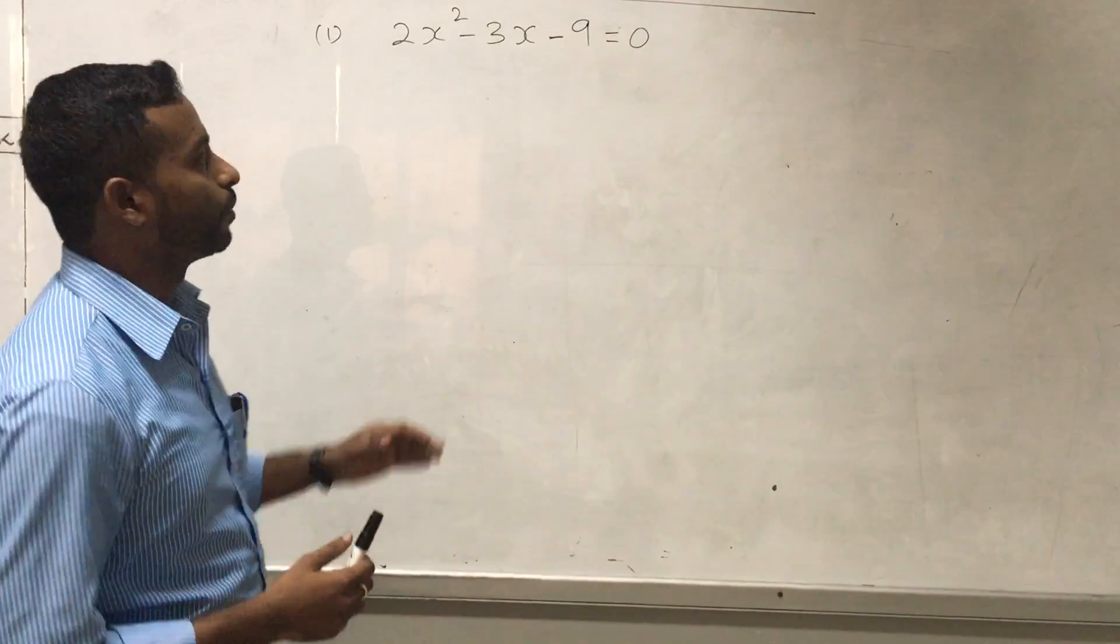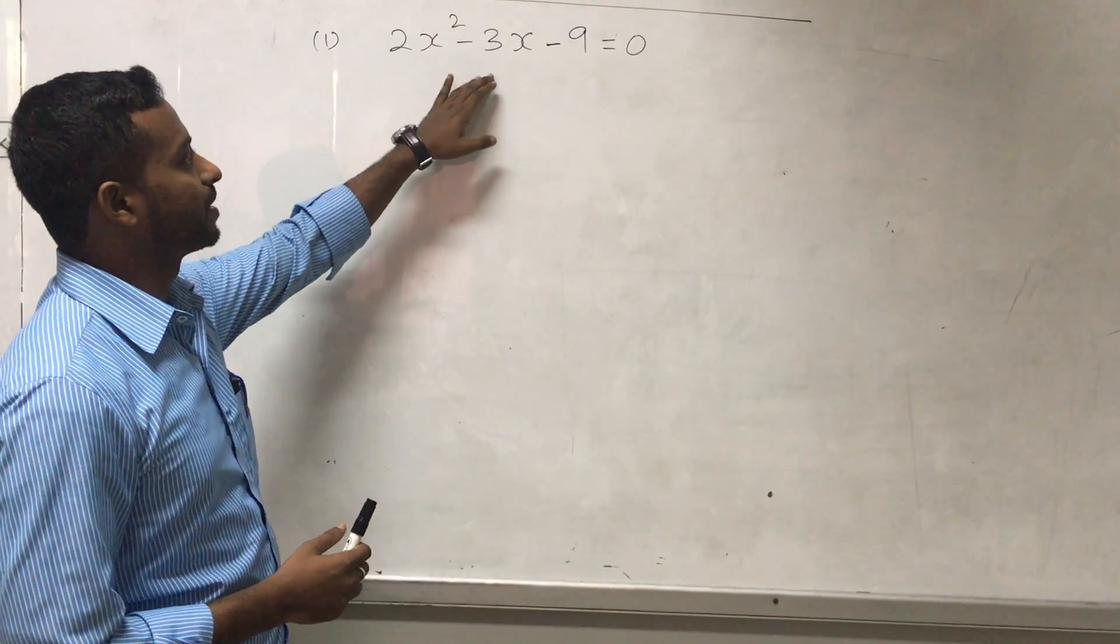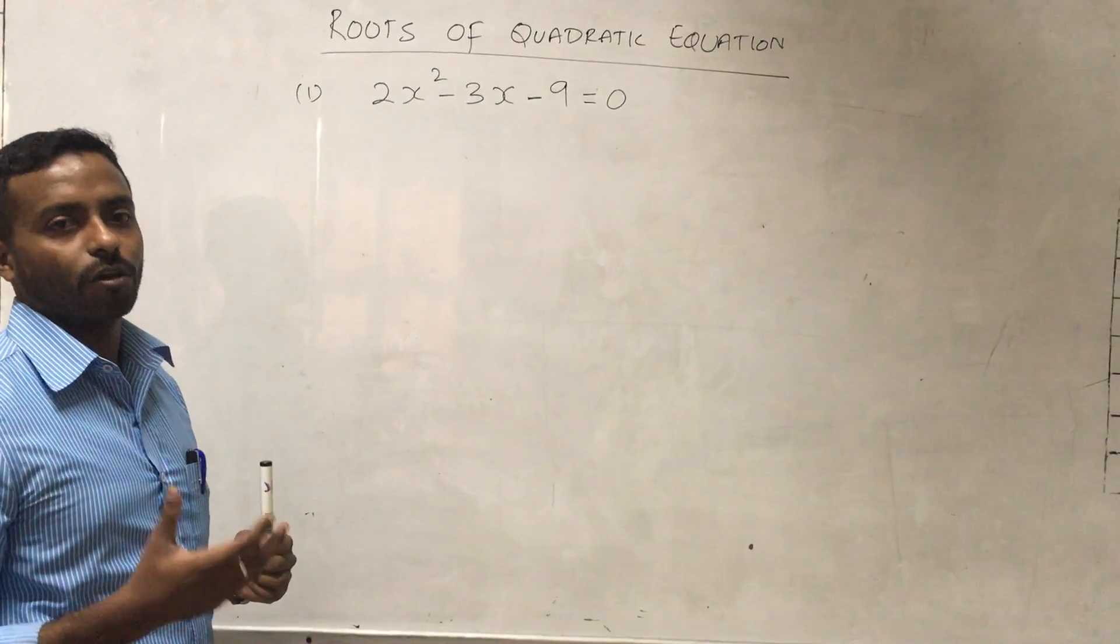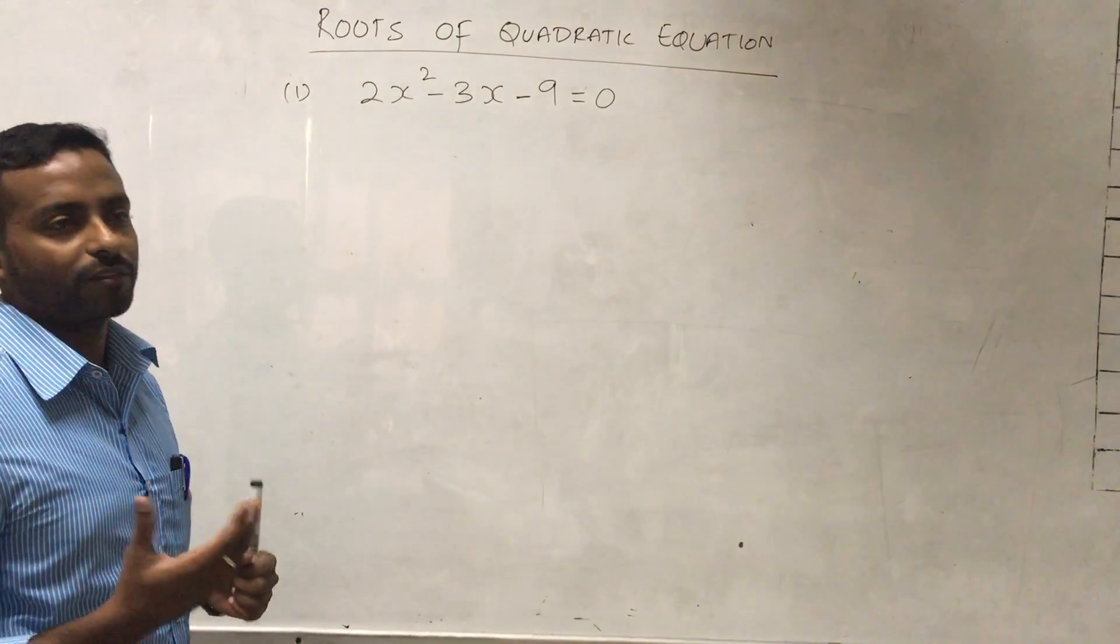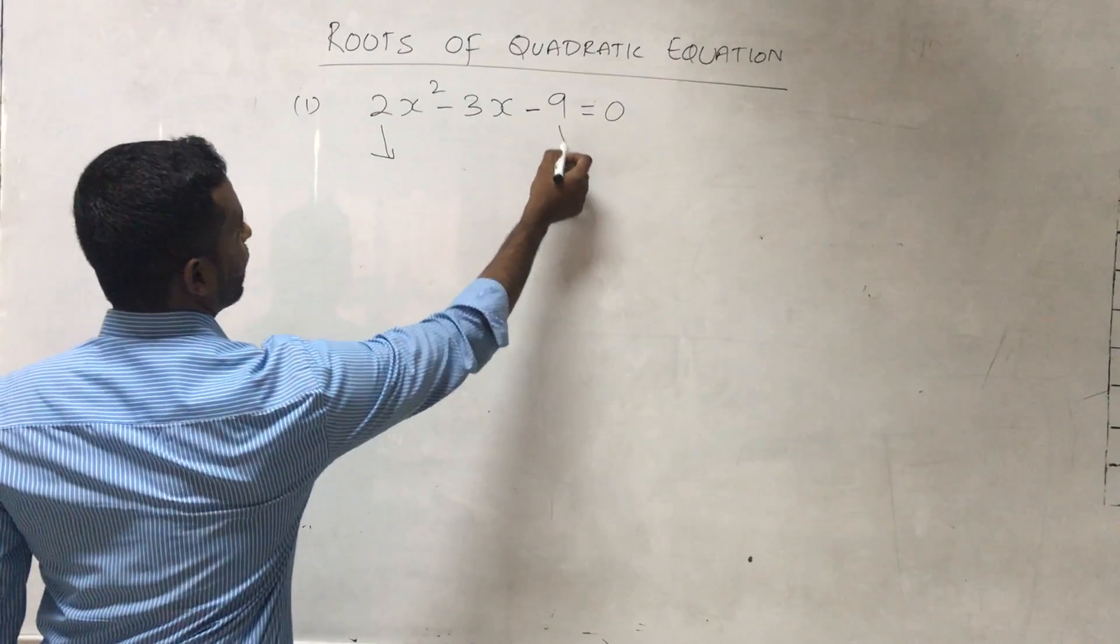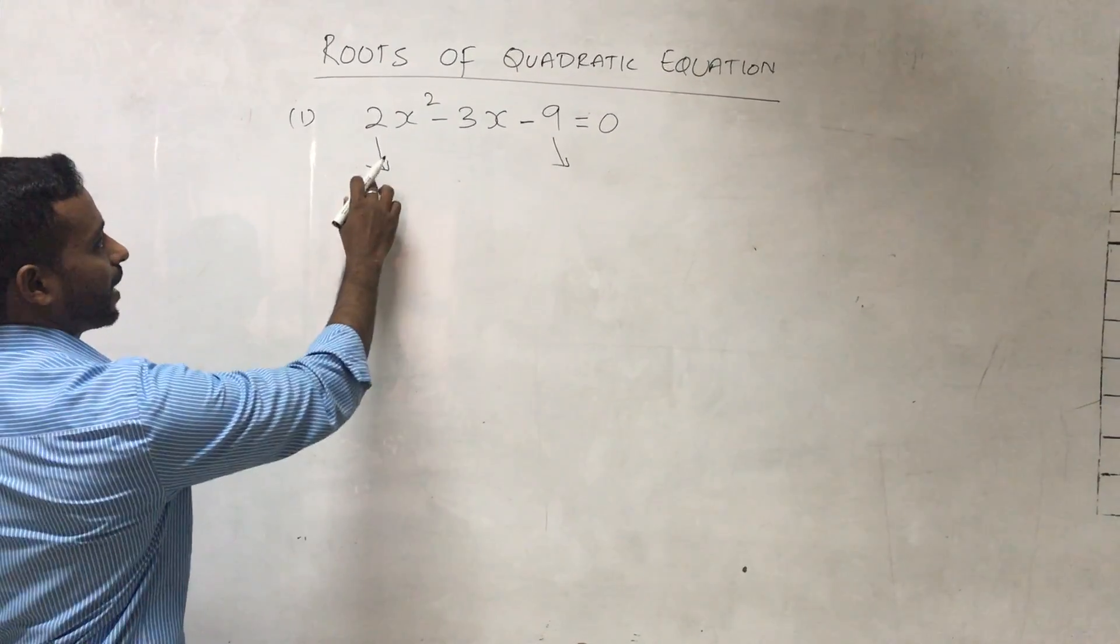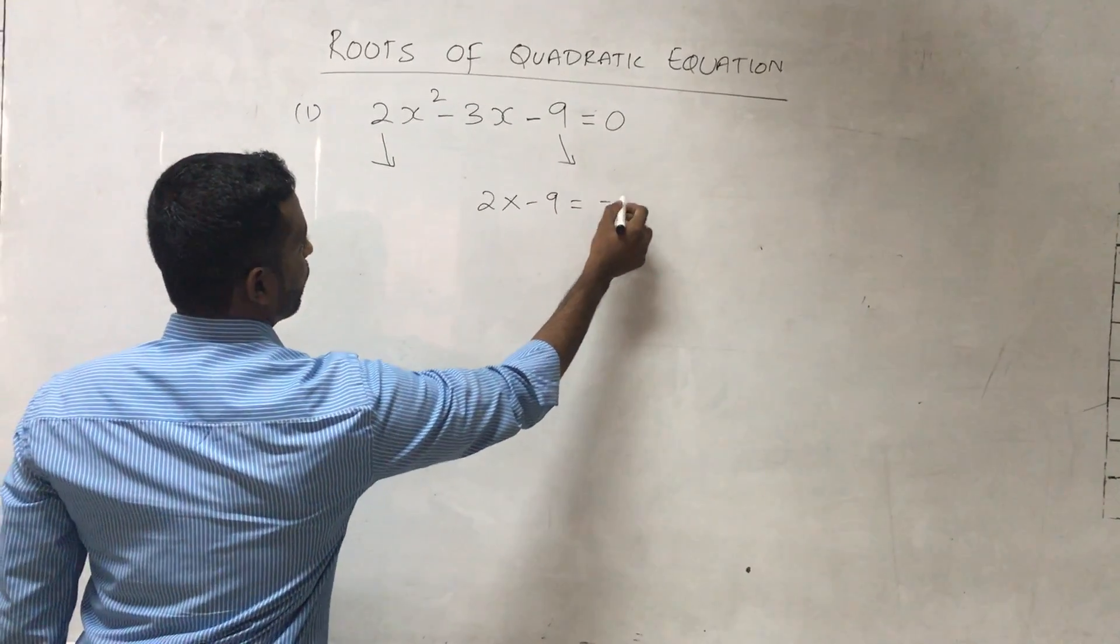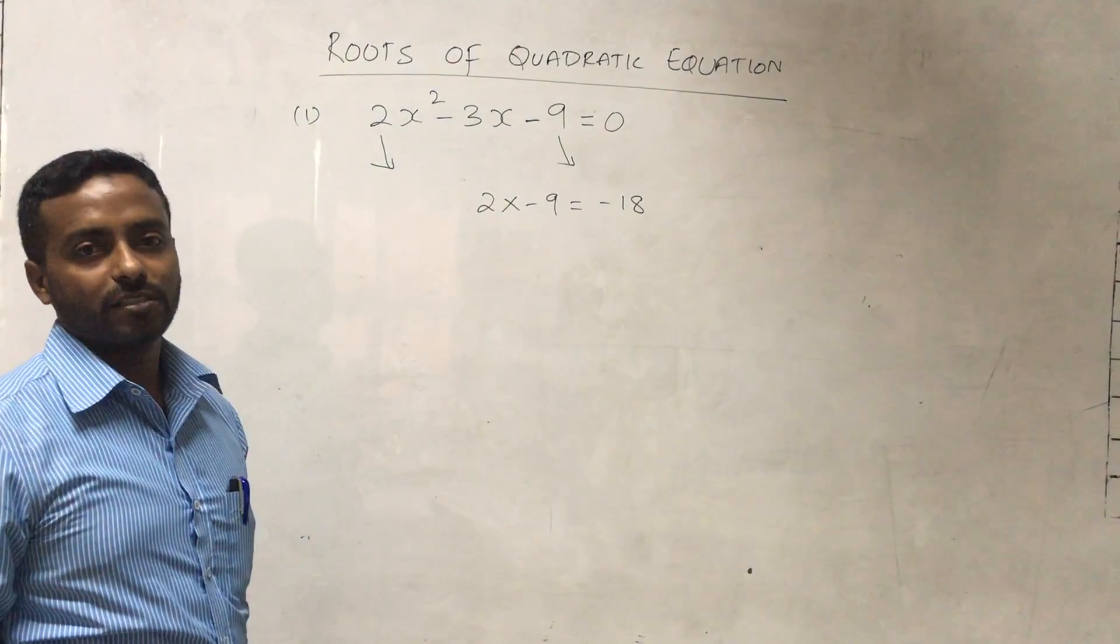We have our equation as 2x² - 3x - 9 = 0. To find the roots by the method of factorization, you need to multiply the coefficient of x² and the constant number. In this case we have 2 and -9. When you multiply it, we get -18.